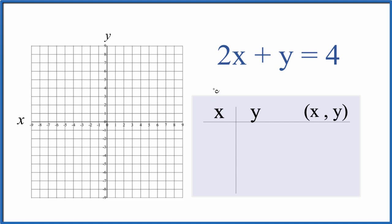We'll put a value in for x, get a value for y, and then we can plot that on our graph here. Why don't we start with 0 for x? That's a good place to start. So 2 times 0, that would just be 0. So y would equal 4.